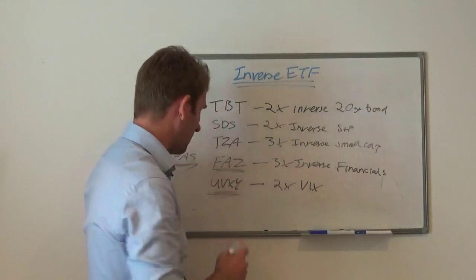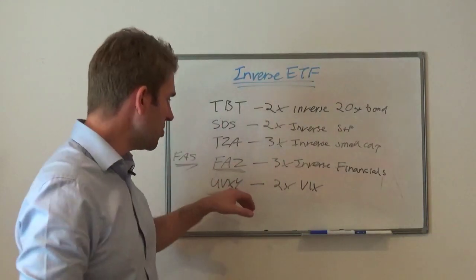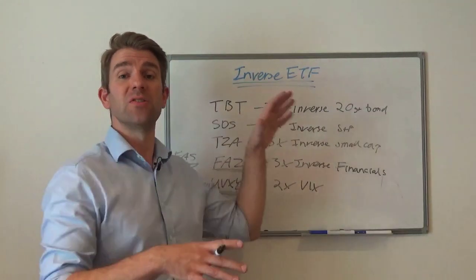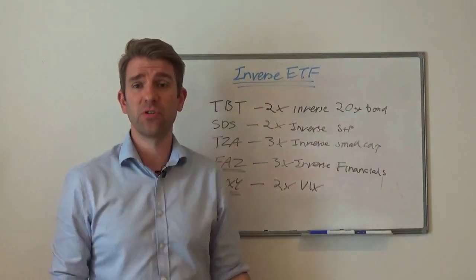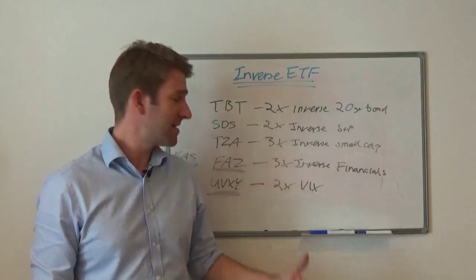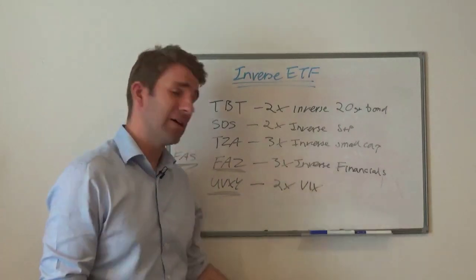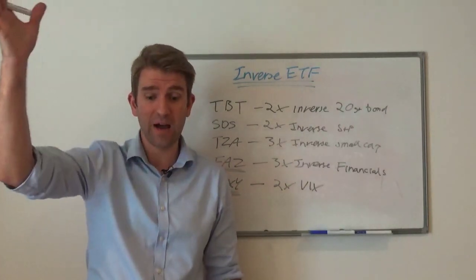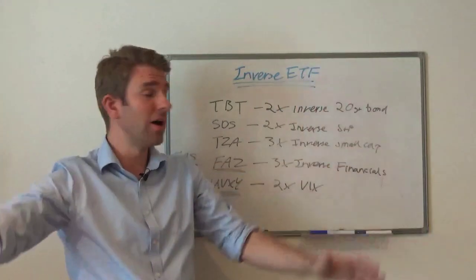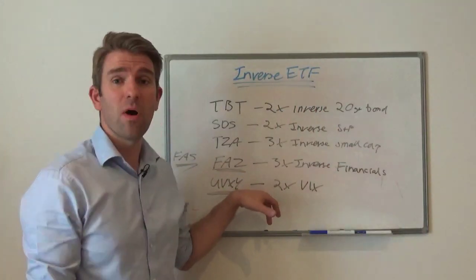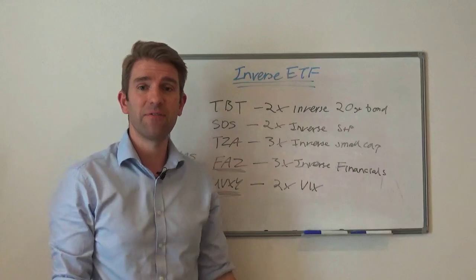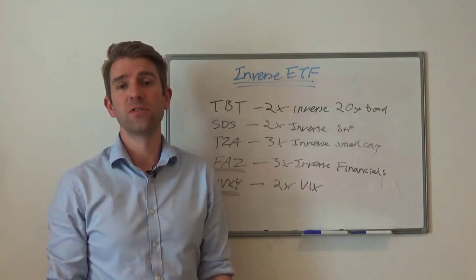Another popular one is UVXY, which is a VIX ETF but doubled — so you've got extra leverage on that. It's not just the VIX, it's a double VIX. We know how the VIX can just spike out of nowhere and go crazy sometimes. When you've got UVXY, then you're really talking crazy — you can get some really hefty moves on that.